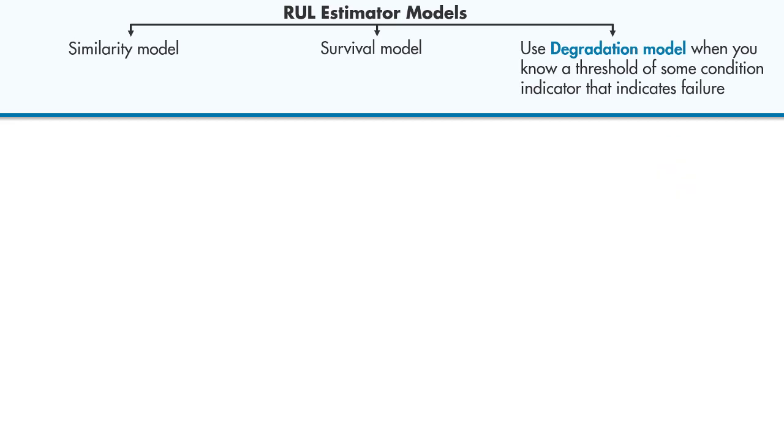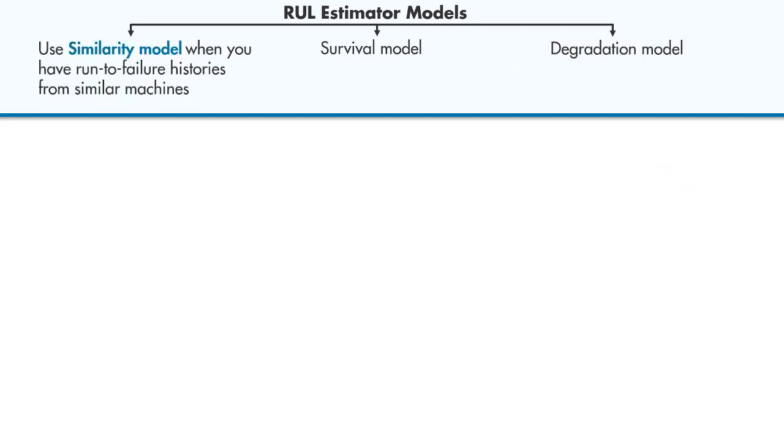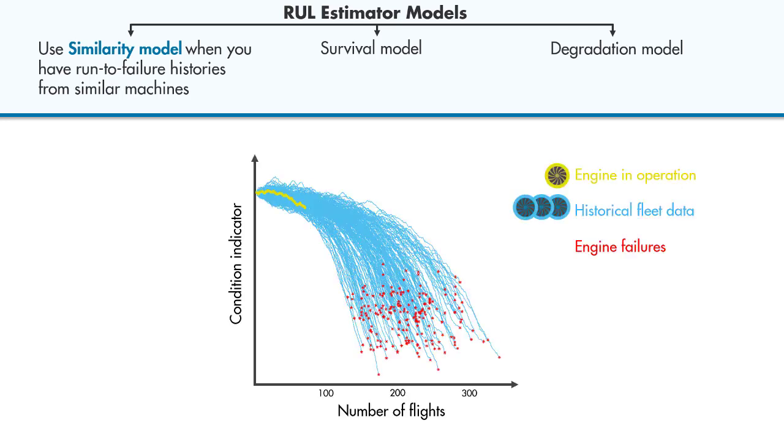The third common way to estimate RUL is to use similarity models. These models are used when we have run-to-failure data. What this means is that we have the complete histories from a fleet with the same type of engine. This includes data from healthy state, degradation, and failure.